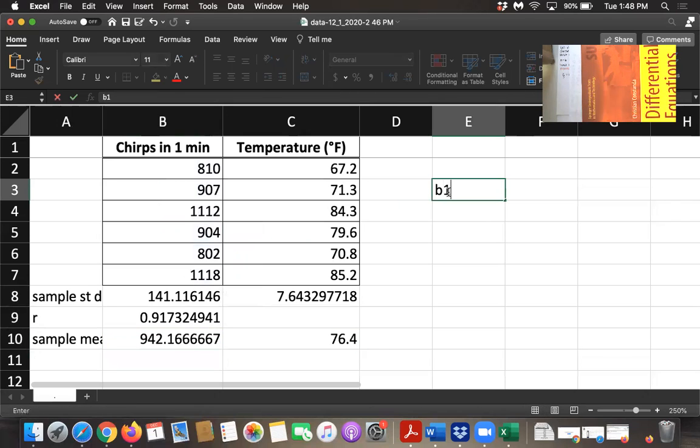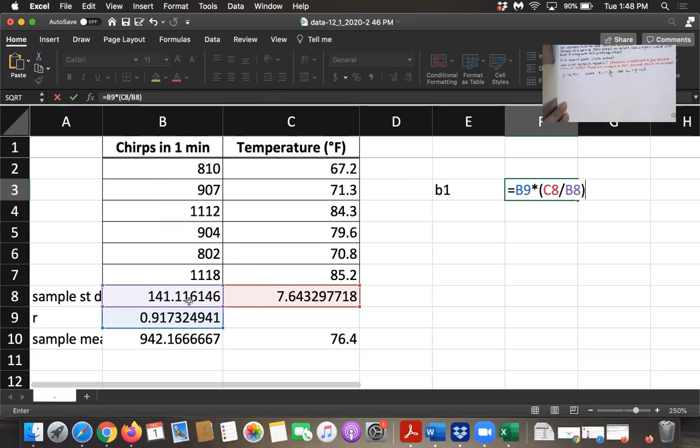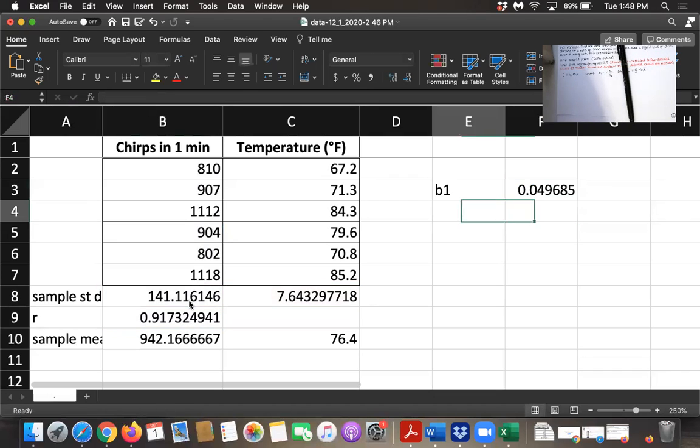And to find b sub 1, that's our slope, we type equals, then select the r value, then multiply by the sample standard deviation for the y values divided by the sample standard deviation for the x values. Oops, I don't know why I put this differential equations book here. I guess I was just trying to make sure my paper didn't fly away. Okay, so that's my b sub 1.